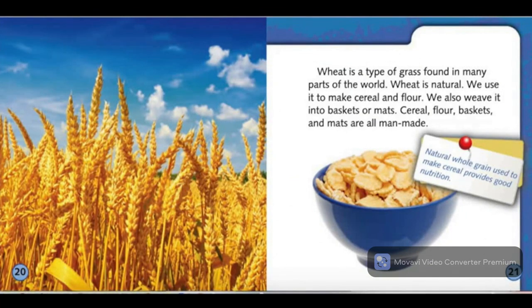Wheat is a type of grass found in many parts of the world. Wheat is natural. We use it to make cereal and flour. We also weave it into baskets or mats. Cereal, flour, baskets, and mats are all man-made.